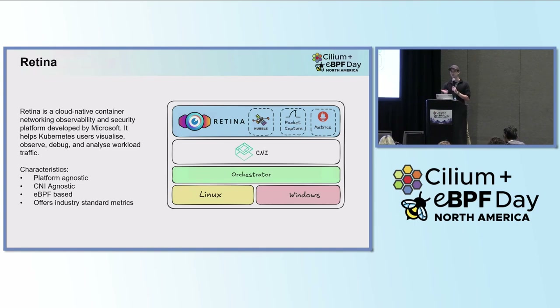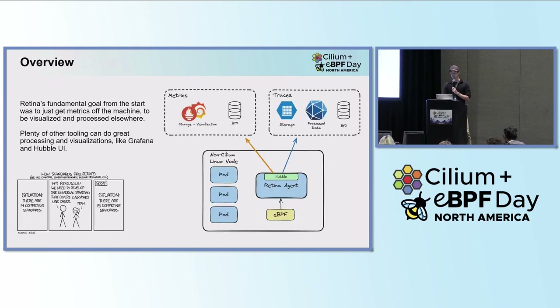The main characteristics of Retina were that it was platform agnostic, CNI agnostic, eBPF-based, and offers industry-standard metrics. In this case, one of the industry-standard metrics we considered is Hubble. We considered Hubble to be an industry standard because we found a lot of people using it. So the main thing was that it was CNI agnostic and adhered to things people were familiar with.